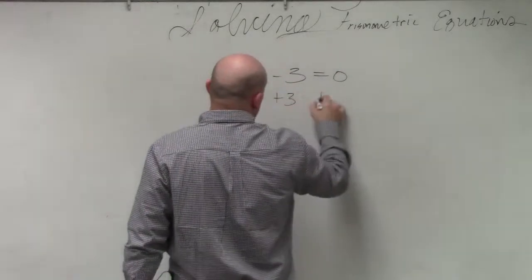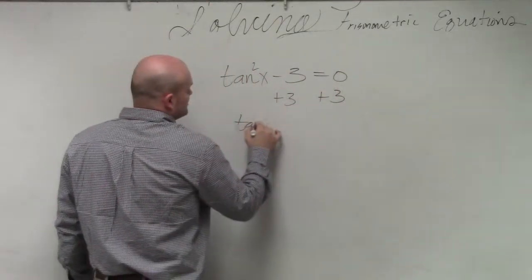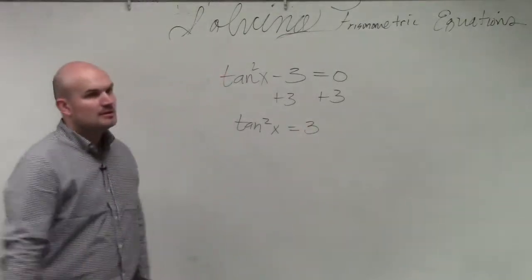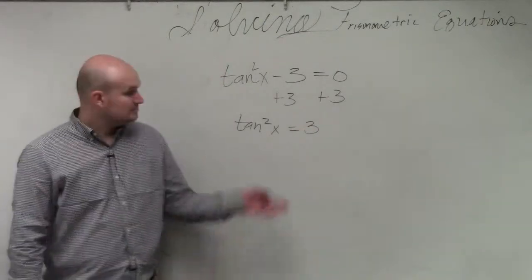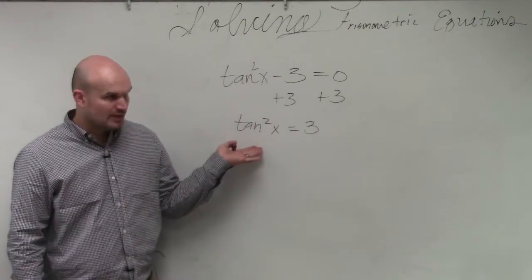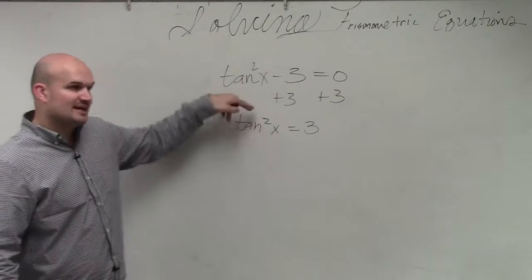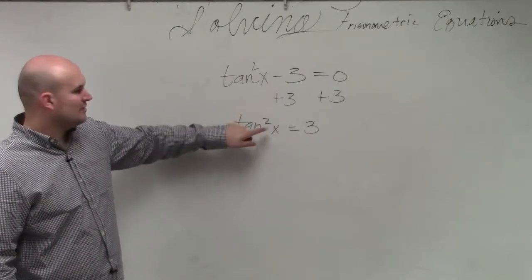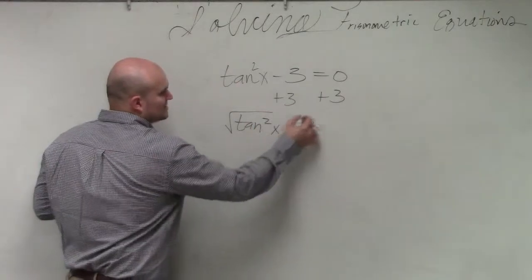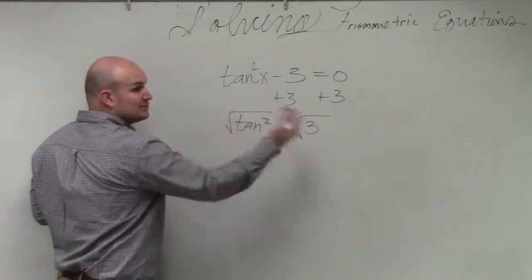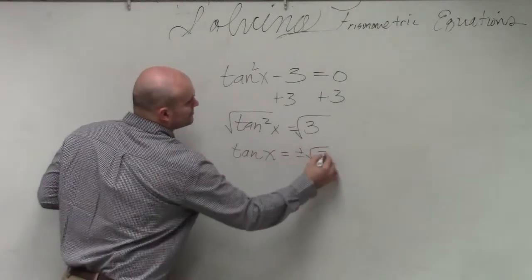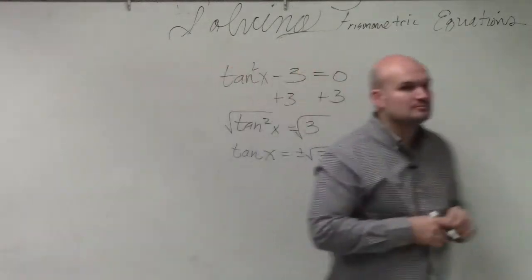So just like you guys have done before, we're going to solve for x. I'm going to add 3 to both sides. Tangent squared of x equals positive 3. The next thing is we've got to get rid of this tangent squared, so I'm going to take the square root of both sides. Please remember, when you introduce the square root, we have to make sure we include plus or minus.